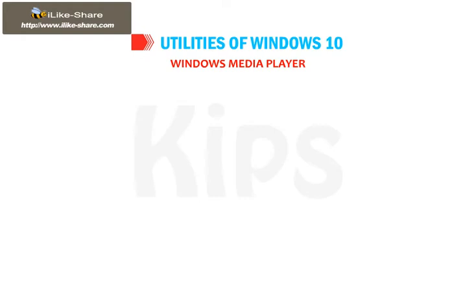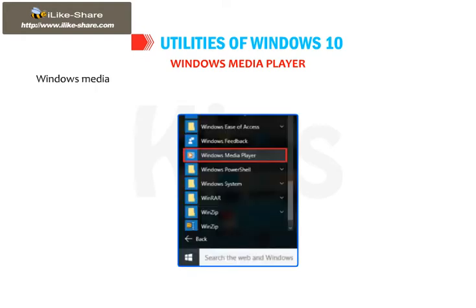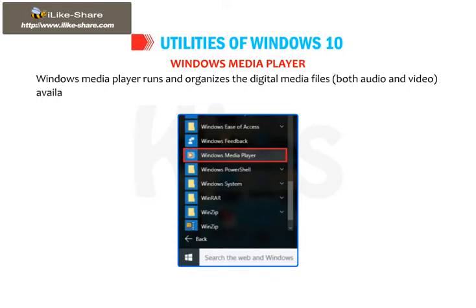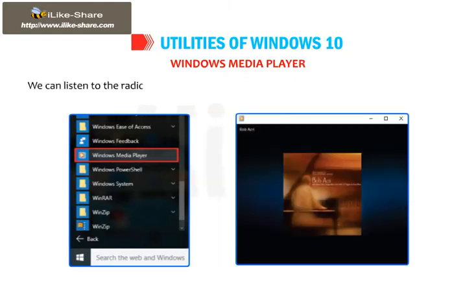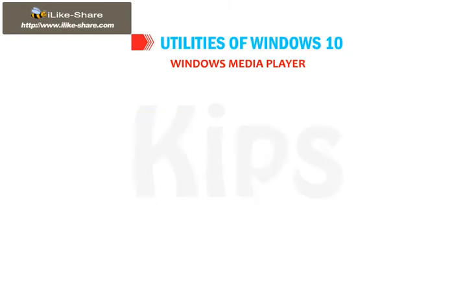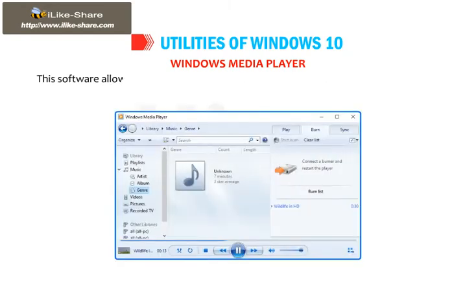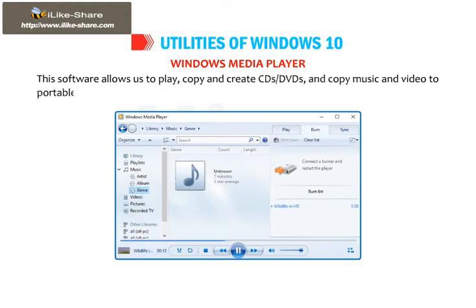Let us first discuss Windows Media Player. Windows Media Player runs and organizes digital media files — both audio and video — available in computer memory. We can listen to radio stations from all over the world if an internet connection is available. This software allows us to play, copy and create CDs or DVDs, and copy music and video to portable devices.